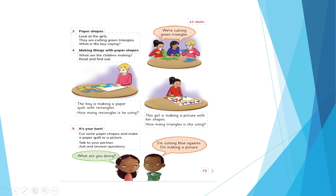Now look here. Those girls — they say: we're cutting green triangles. What are you doing? Remember? We use -ing. I'm cutting blue squares. I'm making a picture. Look here — this boy is making a paper quilt with rectangles, many rectangles. And here this girl is making a picture with her shapes. Can you count the triangles?